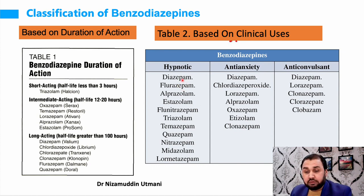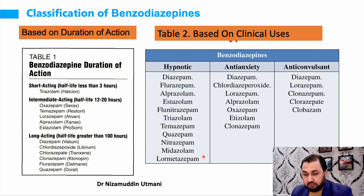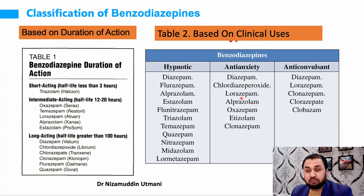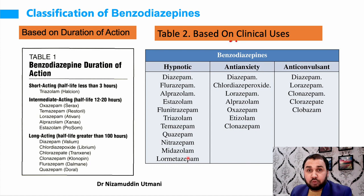Benzodiazepines can also be classified by clinical use. For sedation and hypnosis: diazepam, flurazepam, alprazolam, estazolam, flunitrazepam, triazolam, temazepam, quazepam, nitrazepam, midazolam, and lormetazepam. Lorazepam is available as Ativan; its active metabolite lormetazepam is available as Noctamide, which has a short duration of action and is commonly used for sleep.